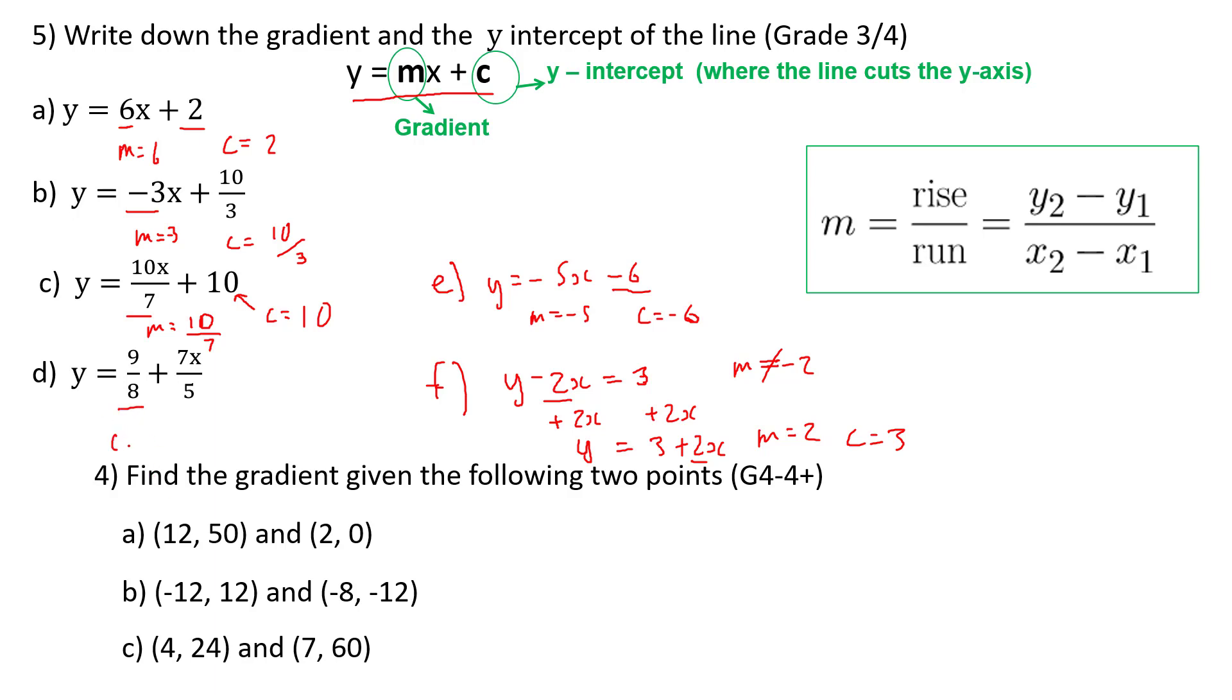So the number on its own, c here, equals nine over eight, and m is what's next to the x, the gradient, and that equals seven over five.